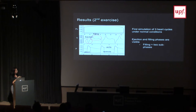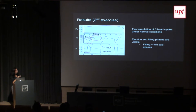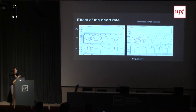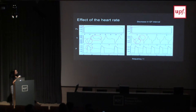In the second exercise we tested other parameters with the more complex model. Here is a first overview of the output of a normal cycle: the PV loop, the flux along the cycle, and the pressure along the cycle, including the pressure in the atrium, and the pressure in the ventricle and how they are related. By increasing the heart rate, as expected, there is a decrease in the diastolic interval, and the same number of peaks appears in both flux and pressure.